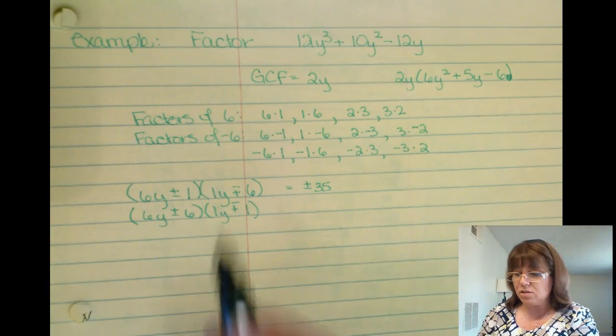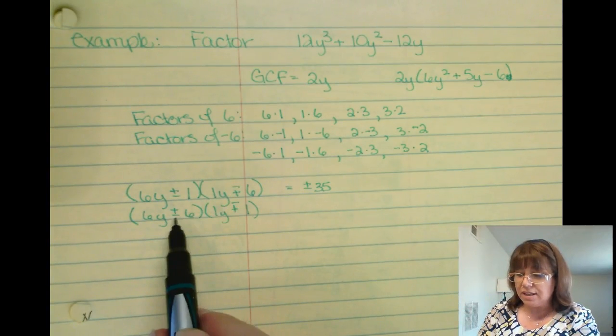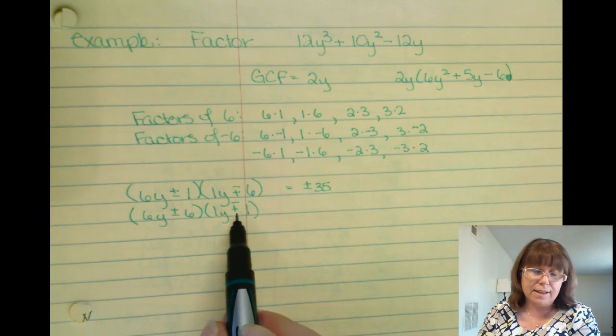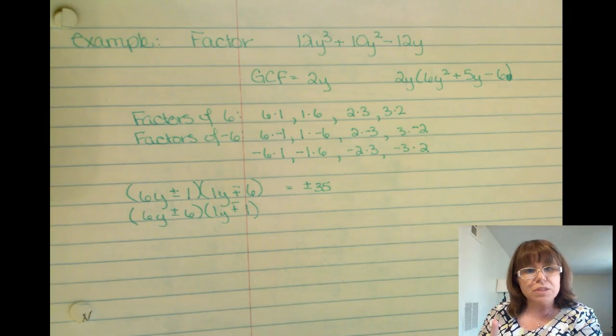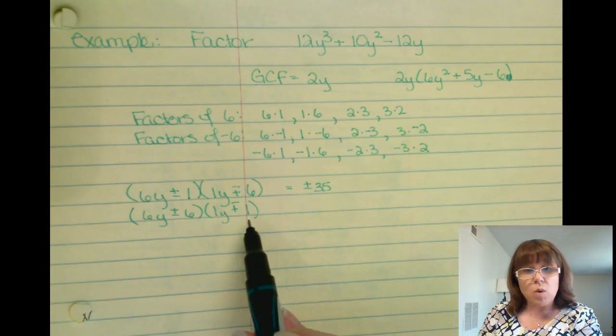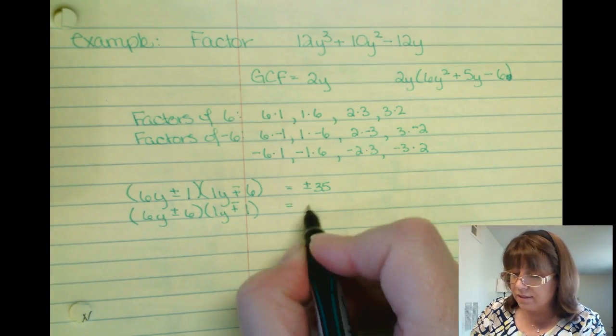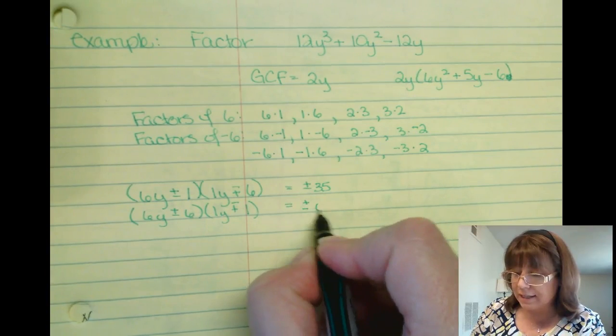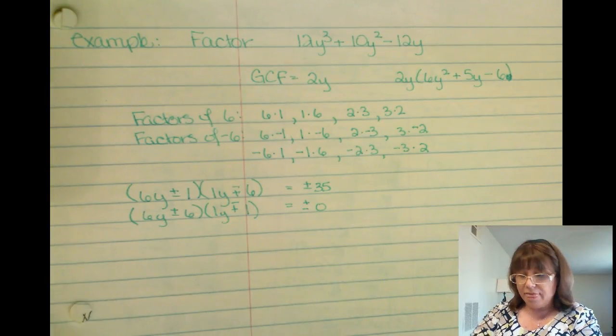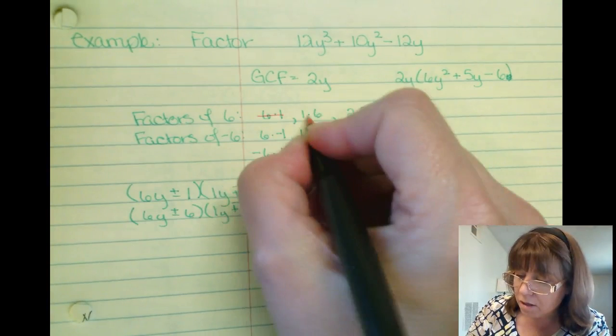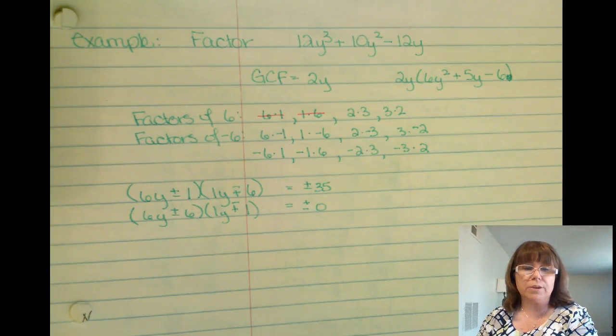Likewise, if I have a 6y plus or minus 6, and a 1y plus or minus 1, remember they're opposite signs, so it would be plus goes with negative, negative goes with plus. Here's the reason why. 6 times 1 is 6, minus 6 times 1 is 6. Therefore this is going to be plus or minus, technically, 0. Therefore I can rule those out immediately.